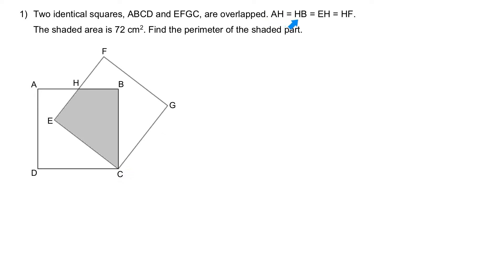AH is equal to HB is equal to EH is equal to HF. What they mean is, this is equal to this, and this is equal to this.